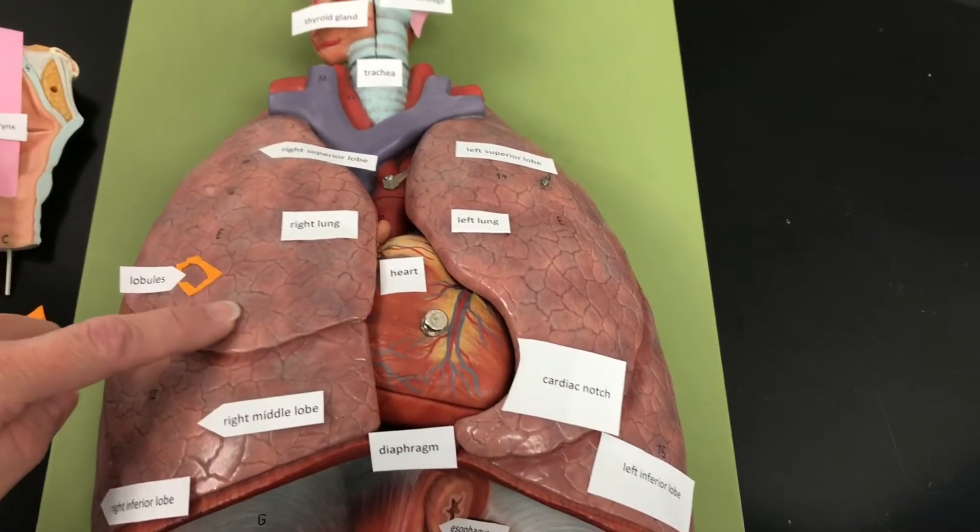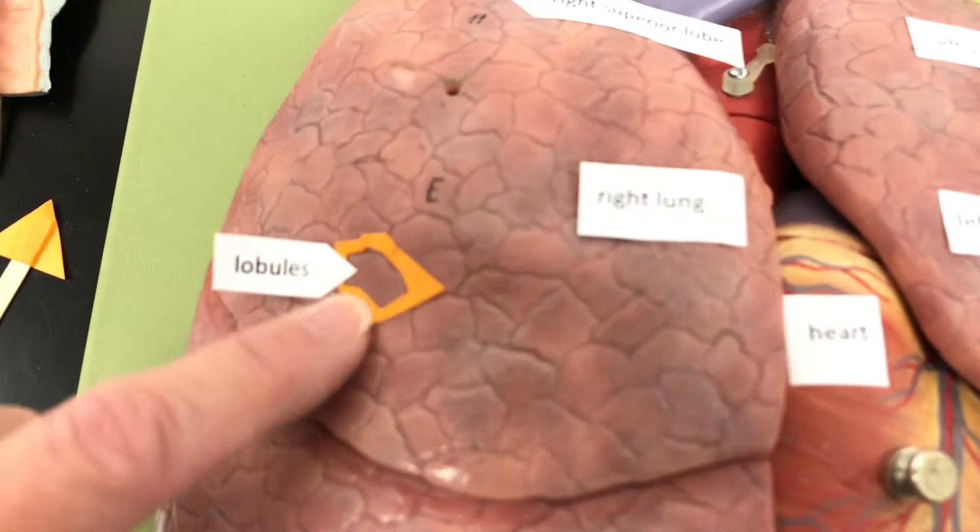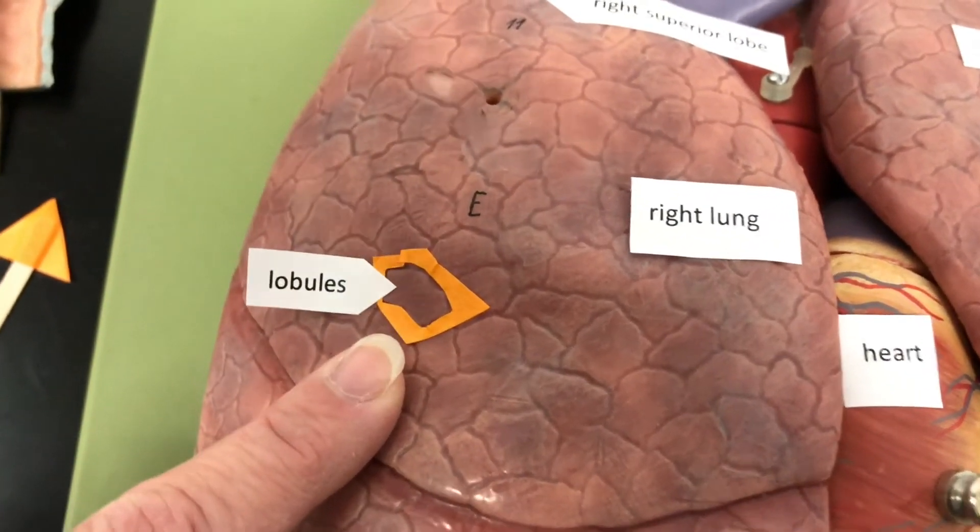These little odd shapes here represent the lobules of the lungs.